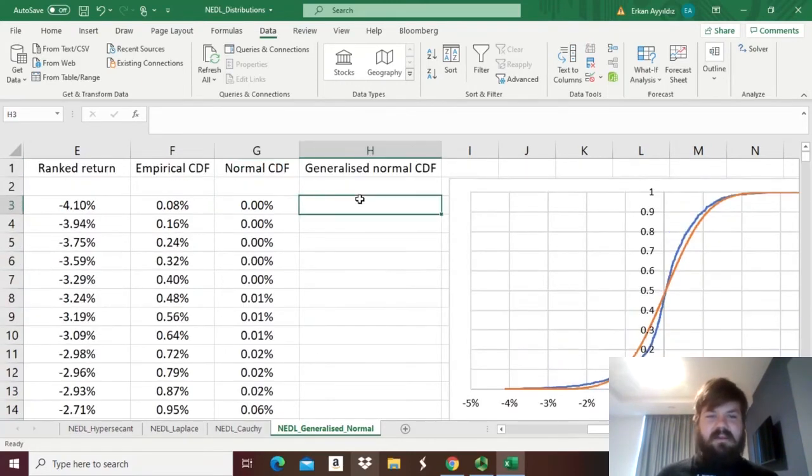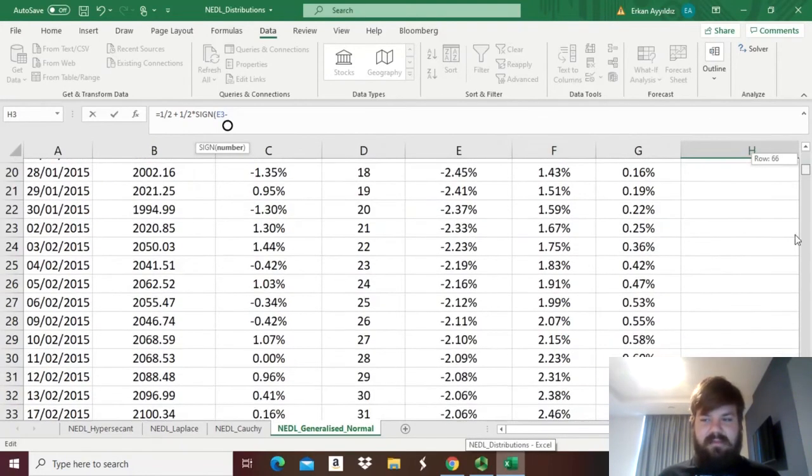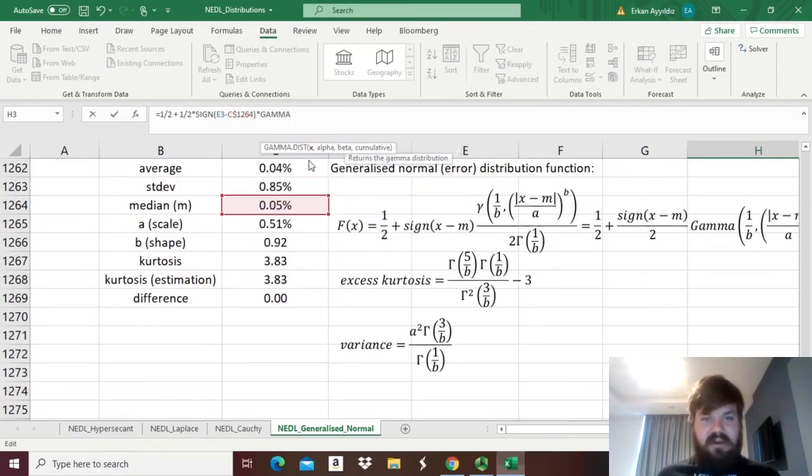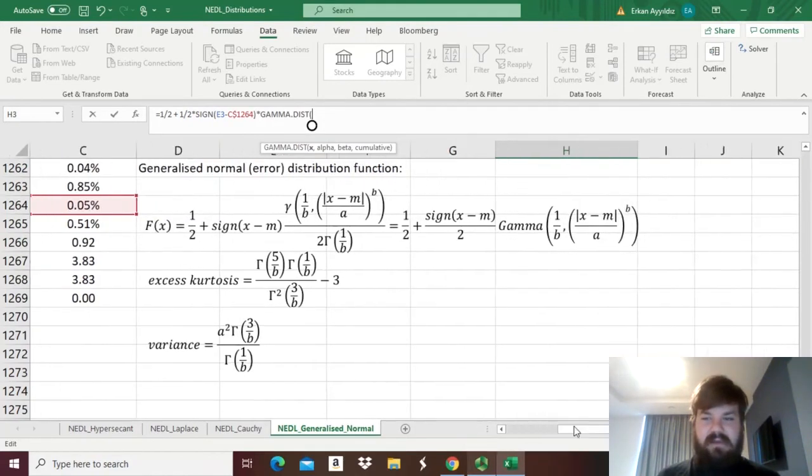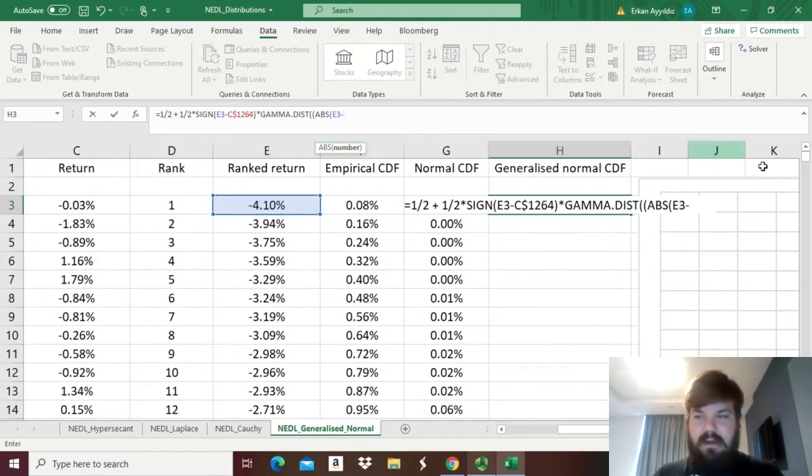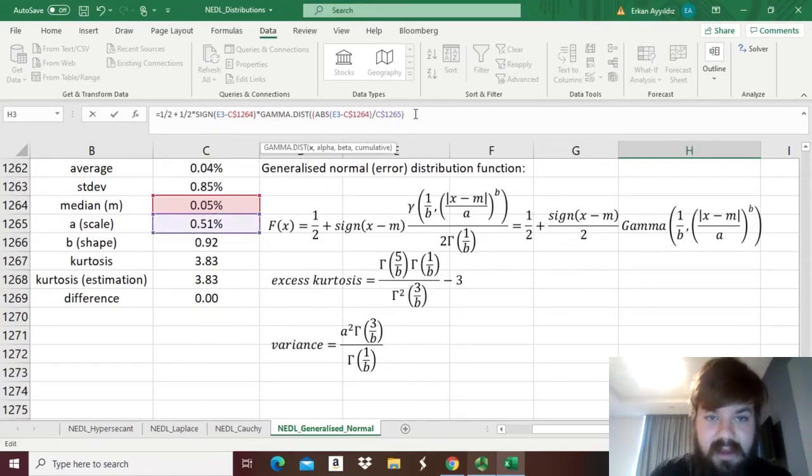Without further ado, let's start with the simple bit. So one half plus one half times the sign of rank return minus m, which is the sample median, and lock the row, times the gamma distribution. For x, we need to input the absolute value of rank return minus the sample median m, then divide it by the scale parameter a and lock that, and raise it to the power of the shape parameter b and lock the row as well.